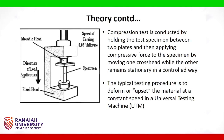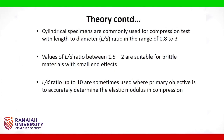Compression test is conducted by holding the test specimen between two plates and then applying a compressive force to the specimen by moving one crosshead while the other remains stationary in a controlled way. The typical testing procedure is to deform or upset the material at a constant speed in a universal testing machine. Cylindrical specimens are commonly used for compression test with length to diameter ratio in the range of 0.8 to 3. Values of L/D ratio between 1.5 to 2 are suitable for brittle materials with small end effects. L/D ratio up to 10 are sometimes used where the primary objective is to accurately determine the elastic modulus in compression.